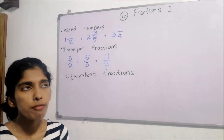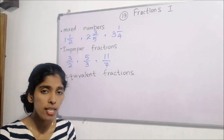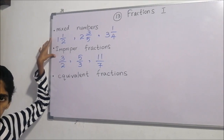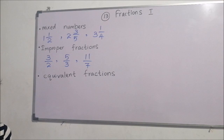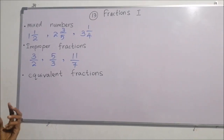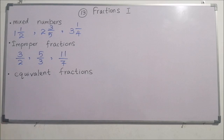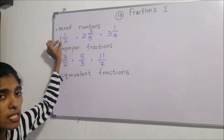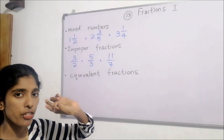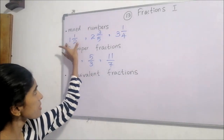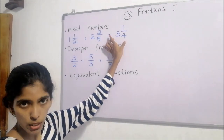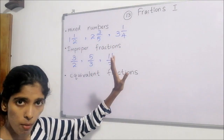Before going to multiplication, we will recall what are improper fractions and mixed numbers. By adding a whole number and a proper fraction, we can form a mixed number — not a mixed fraction, we call it a mixed number. Examples are: one and a half, two and three fifths, three and one fourth.